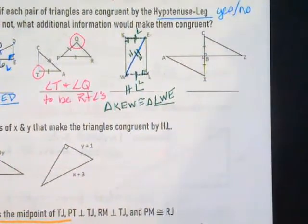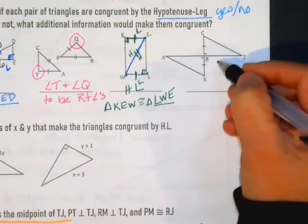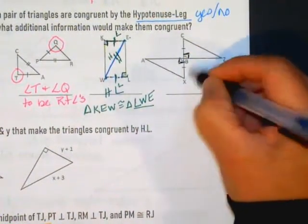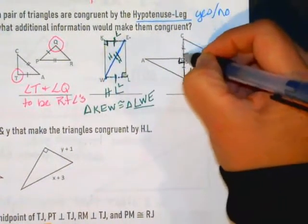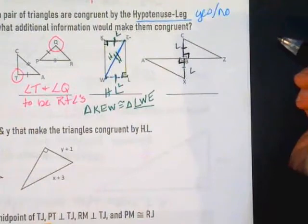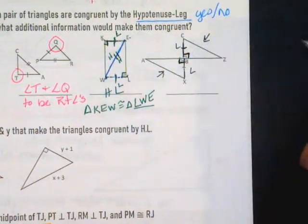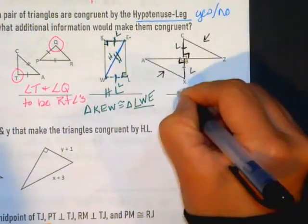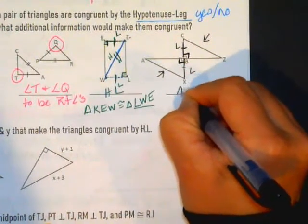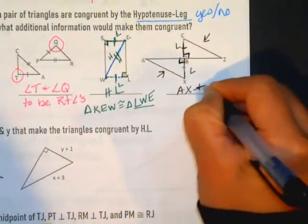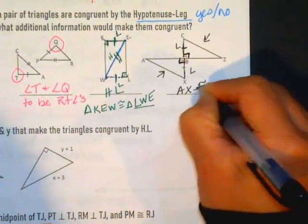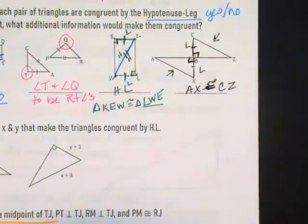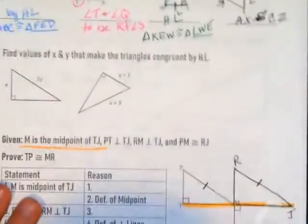For the last example, we have right angles formed by vertical angles. We have a pair of legs congruent, but we're missing the hypotenuses. This side is the hypotenuse across from the right angle, and this is the other hypotenuse, but we don't know they're congruent. We would need to know that AX is congruent to CZ — that's what's missing. The hypotenuses would need to be congruent and we don't know that.